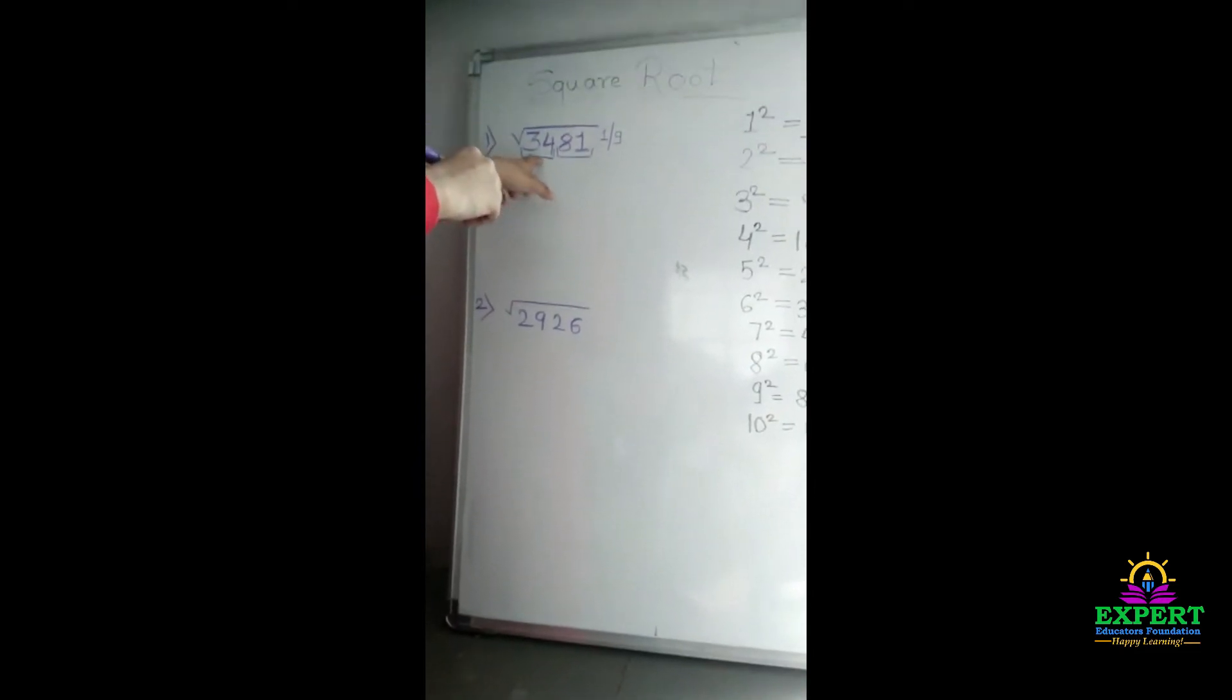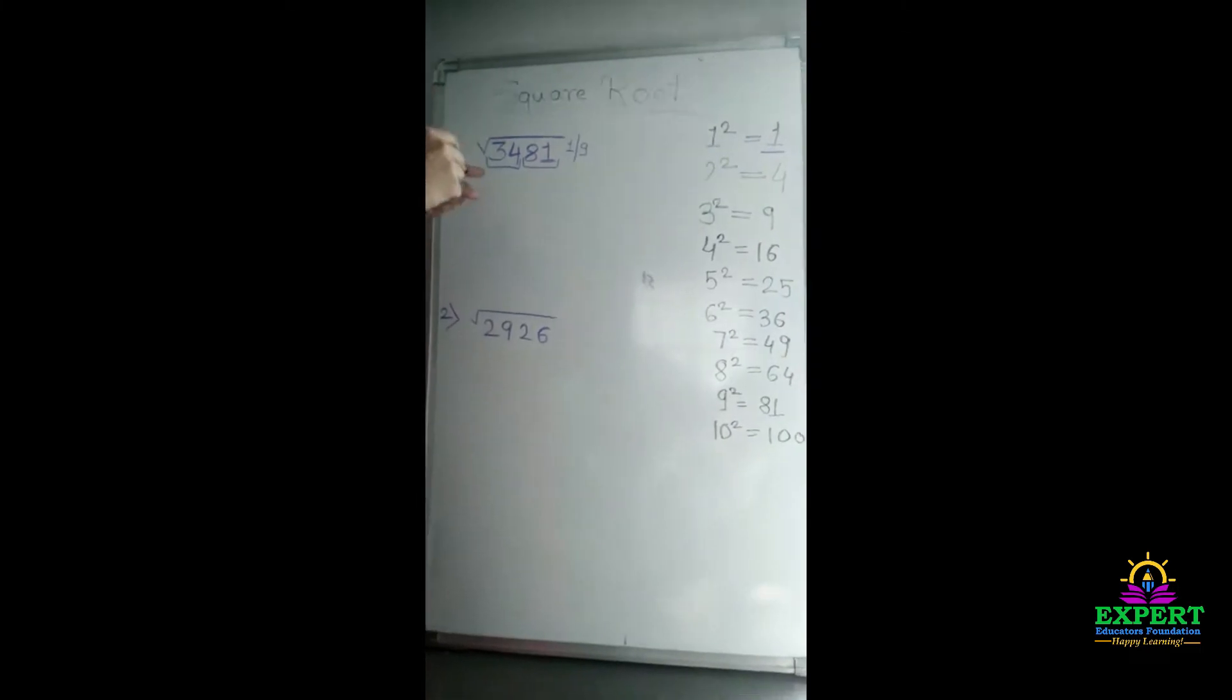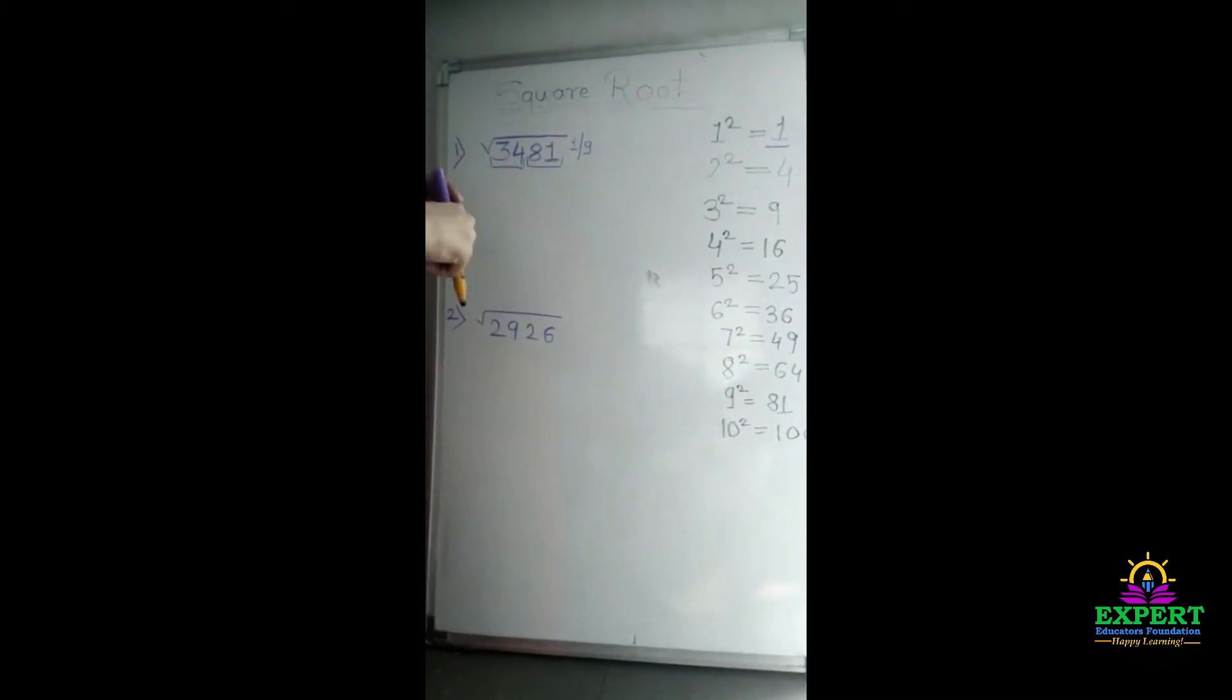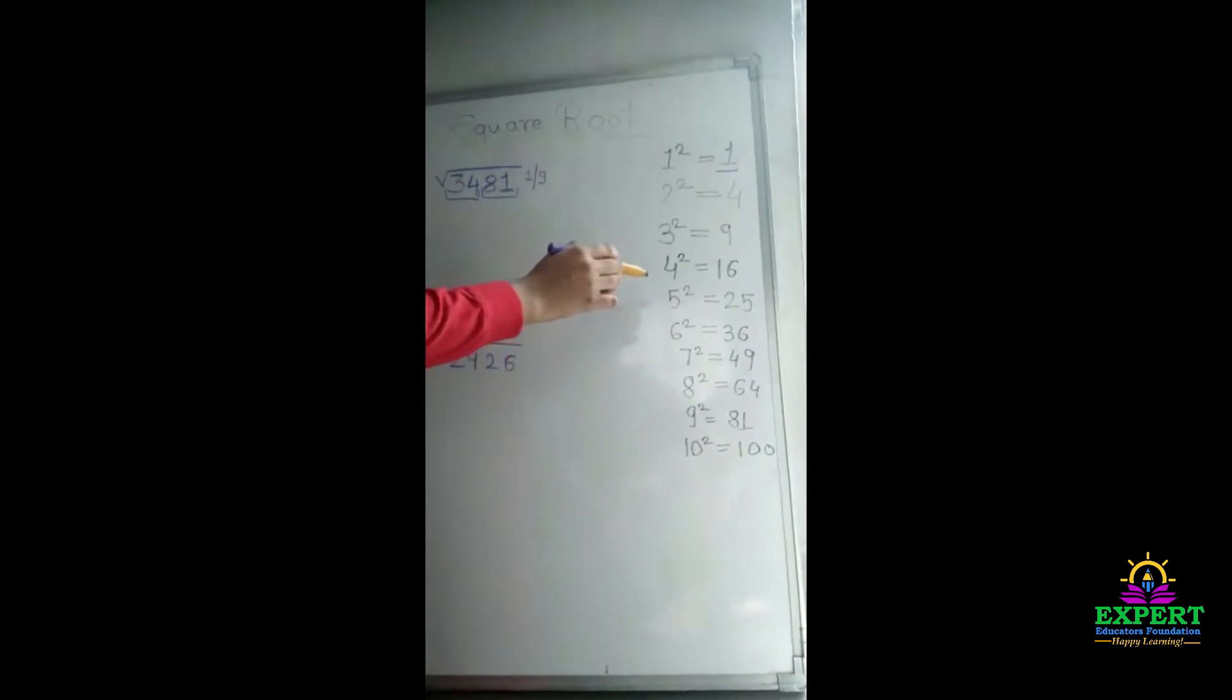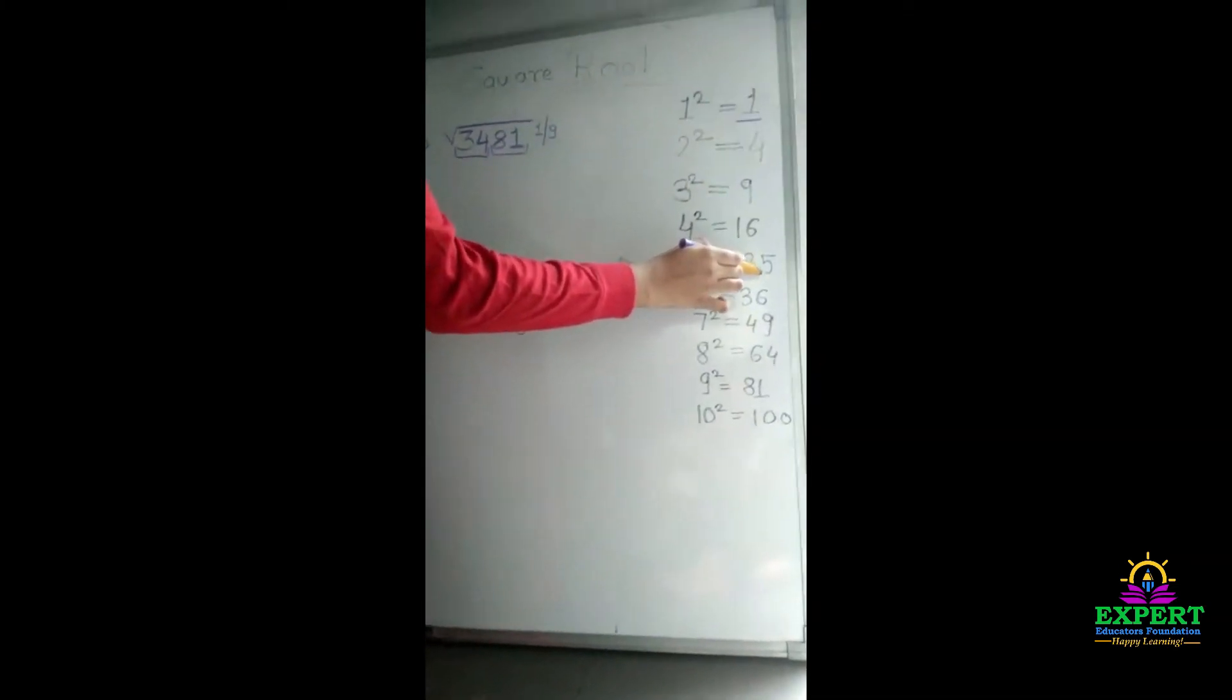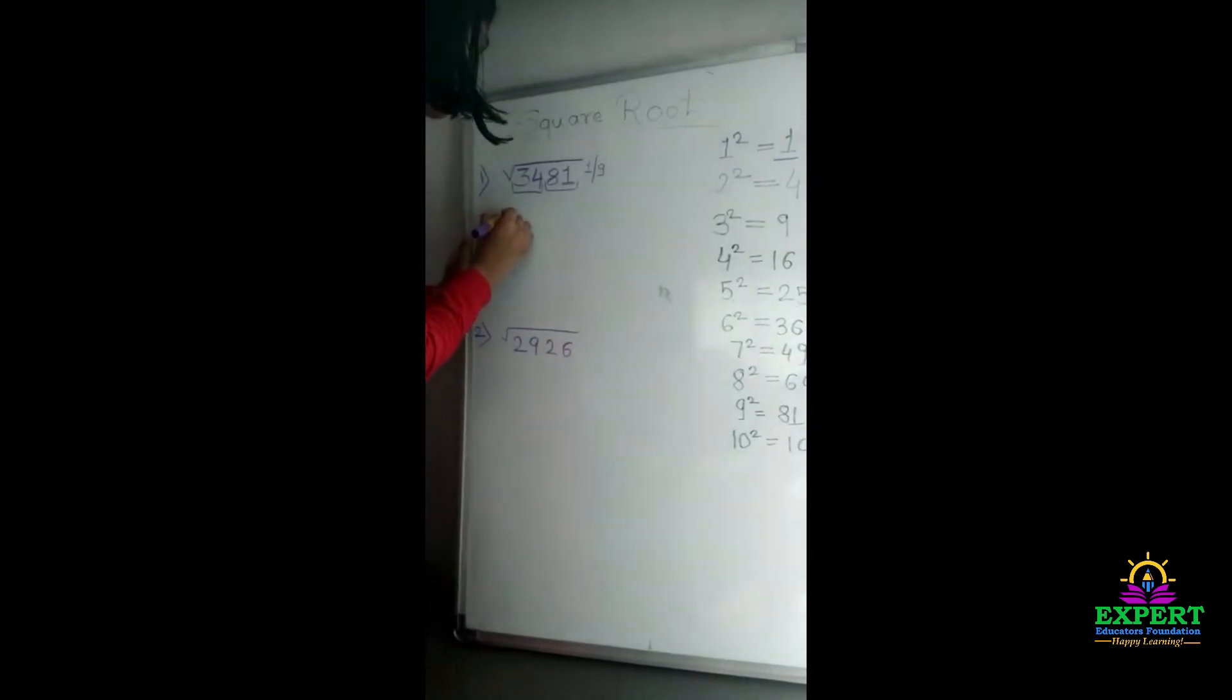Next, we will take second team, the team is 34, the number is 34. Now we will see here which number is less than 34. We have 25 which is on 5, so our first number will be 5.